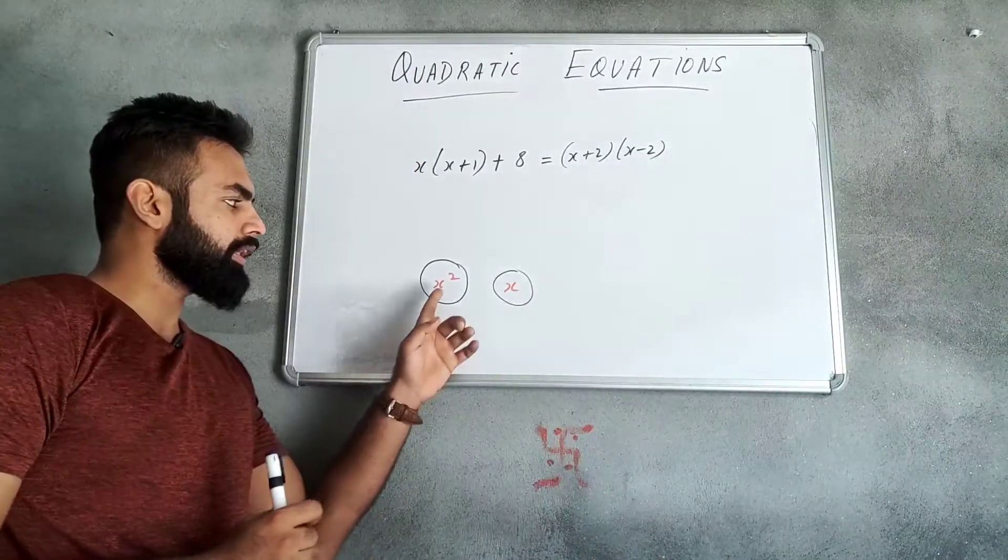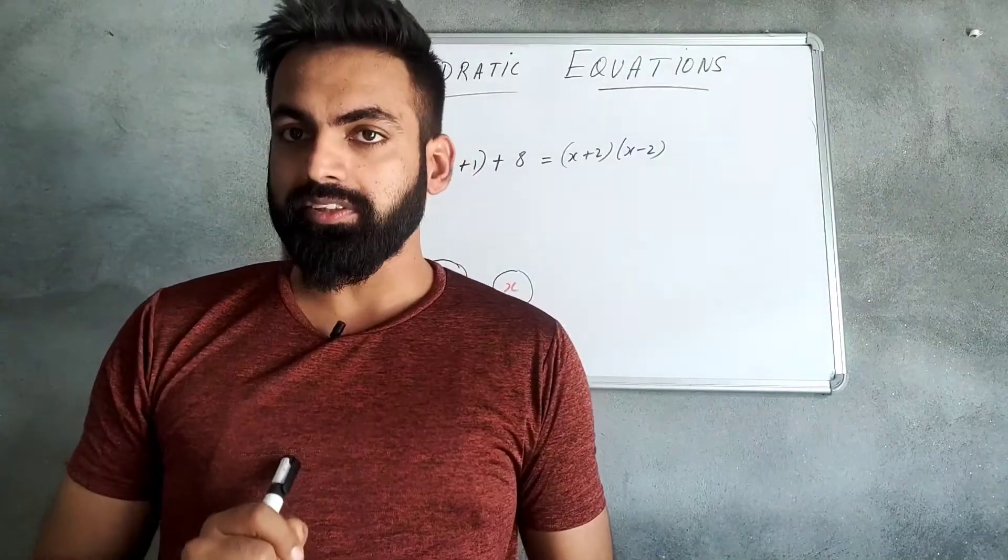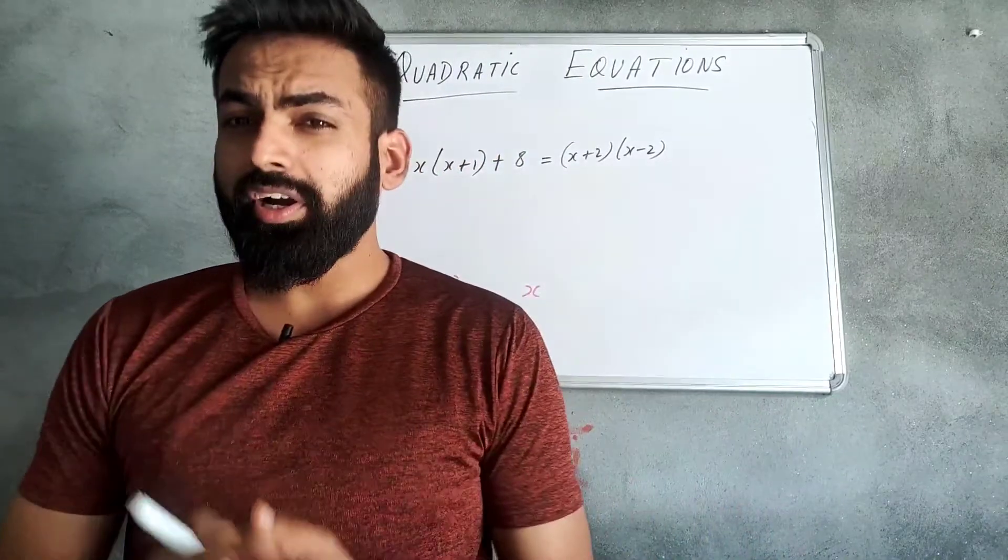In this equation, there is a variable of maximum power 2. So it will be a quadratic equation. Yes, there is a general form of quadratic equation.